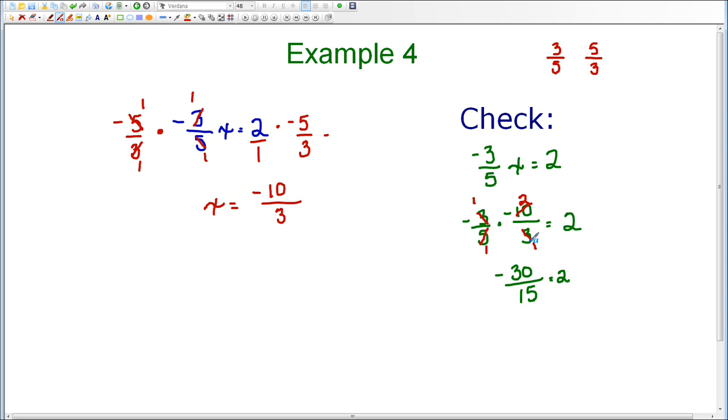So either way you would like to check it is fine. That just shows you two different ways. So I know that since the left-hand side equals two and the right-hand side equals two, that my answer of negative ten-thirds is correct.